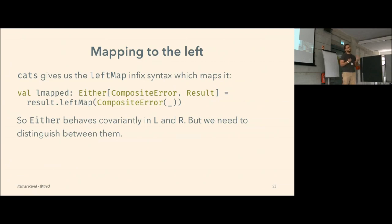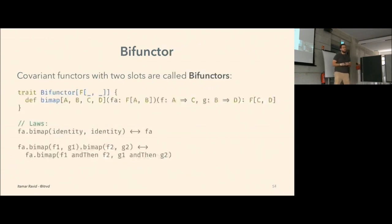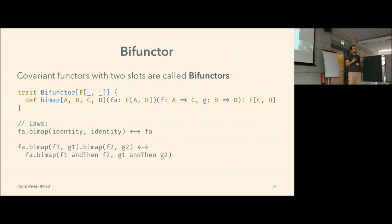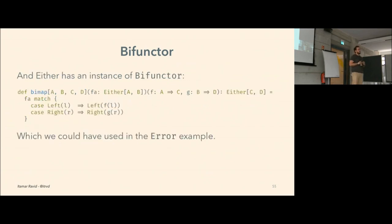Handily, we have the bifunctor for that. The bifunctor is defined for a type constructor with two slots — instead of F with one type parameter, we have F taking two type parameters. It is defined by the `bimap` function, which takes an F of A and B, a function from A to C, and a function from B to D, and gives us back an F of C and D. This functor also has two laws governing composition and identity — it preserves identity and forward composition in both slots. Either has an instance of bifunctor: we pattern match on the Either, check which case we have — Left or Right — and apply the right function.